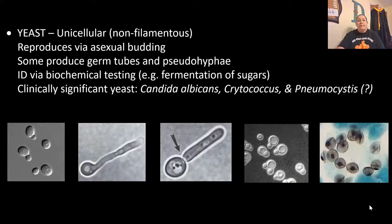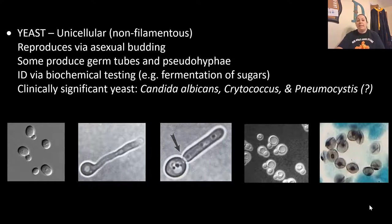Yeast is a unicellular fungus — it does not have the filaments seen with hyphae. Yeast reproduce asexually through budding. Some produce germ tubes and have what we call pseudo-hyphae — pseudo means false, so they don't actually have hyphae but it looks like they're starting to develop them. We can identify yeast by biochemical testing — specifically how they ferment and utilize sugars for energy. Clinically significant yeast include Candida albicans, Cryptococcus, and Pneumocystis.